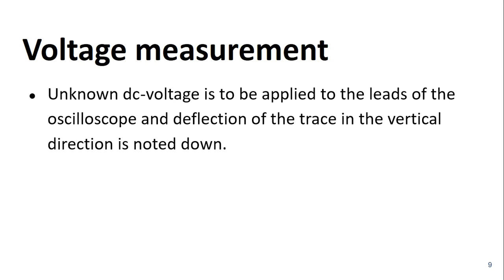For the measurement of direct voltage, firstly the spot is centered on the screen without applying any voltage signal to the deflection plates. Then the DC voltage that is to be measured is applied between the vertical deflection plates and the deflection of the spot is observed on the screen.